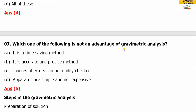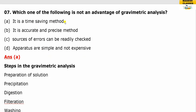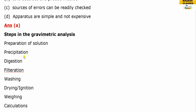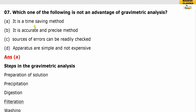Question six: which of the following is NOT an advantage of gravimetric analysis? The answer is time-saving method. Gravimetric analysis involves many steps: preparation of solution, precipitation, digestion, filtration, washing, drying, and weighing calculation — so it is not a time-saving method. That is not an advantage. The advantages are: it is an accurate method, errors can be readily checked, and the apparatus are simple.